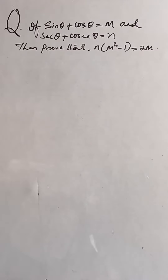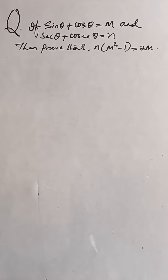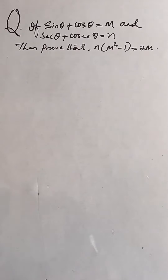If sin θ + cos θ = m and sec θ + cosec θ = n, then prove that n(m² − 1) = 2m.